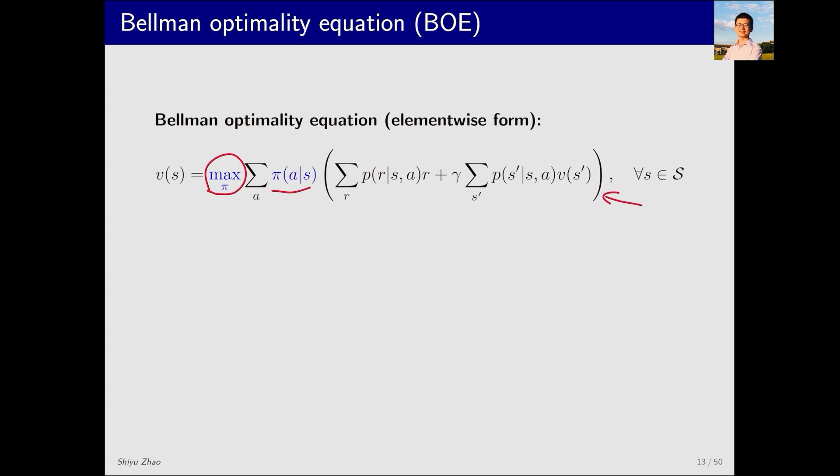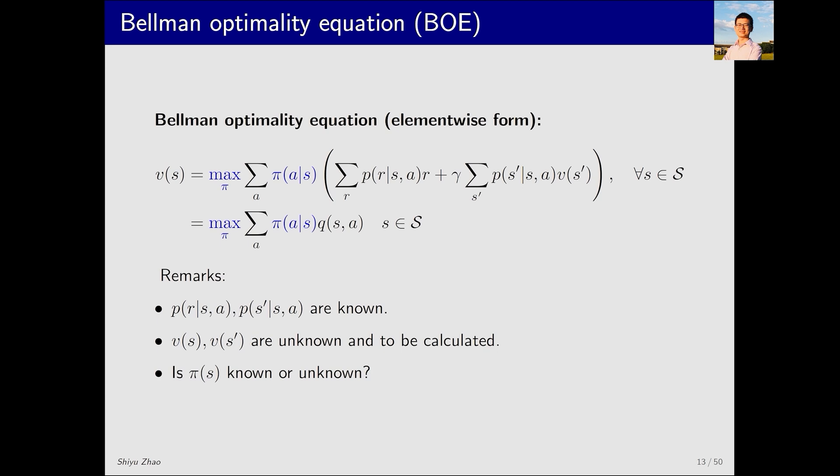This is the Bellman optimality equation. I know you may have many questions in your mind now, including how to solve for π and so on. Don't worry, we'll answer all these questions in detail. The complex term on the right can be simply expressed as Q(s, a). What do we know and what are we aiming to solve? We know the probabilities corresponding to the system's model, the reward and the discount rate gamma. What we aim to solve is the value of V.